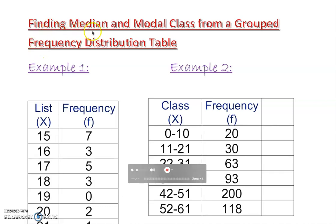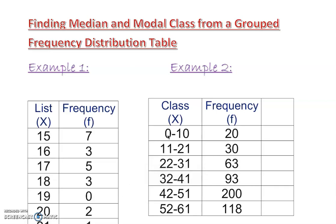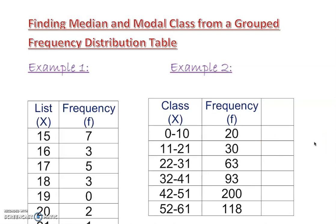Welcome back. Today I'm going to show you how to find the median and modal class from a grouped frequency distribution table — both grouped and ungrouped. If it is grouped we call it a class; if it is ungrouped we call it a list. After going through this video, you should be able to find the median and modal class from any kind of frequency distribution table.